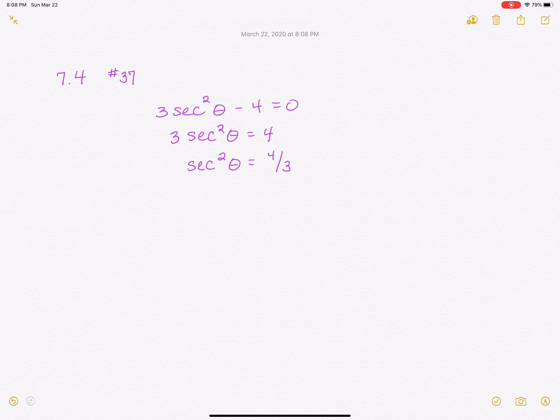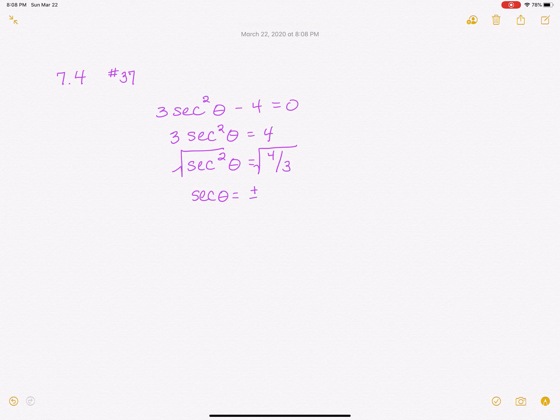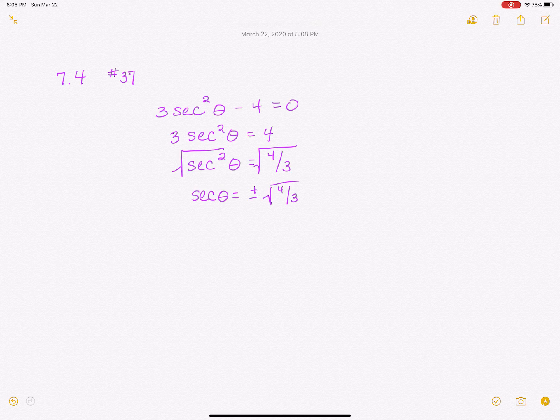Now I want secant by itself. So I'm going to take the square root of both sides. And remember that when you take the square root of both sides in an equation, that's going to give me secant of theta. On the other side, I'm going to get the positive and the negative values of the square root of 4 over 3.